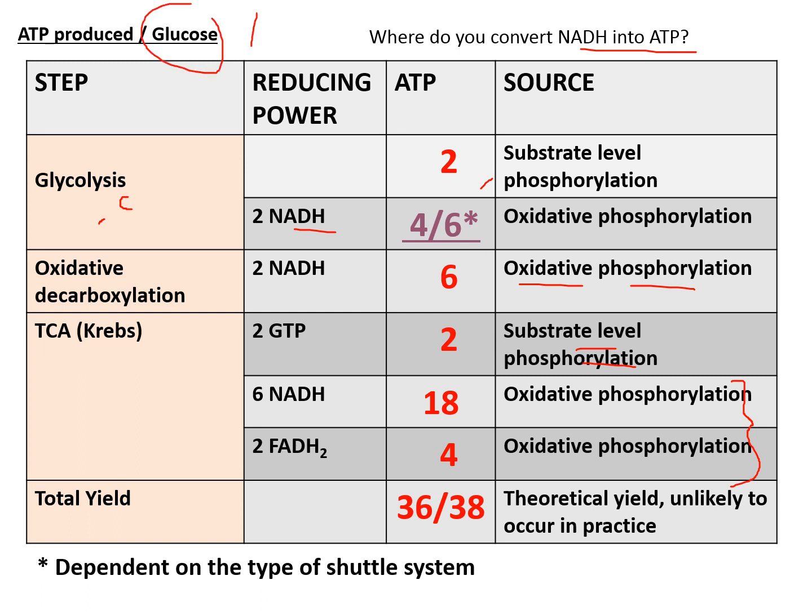With all these added together, you get a total of either 36 or 38 ATPs from just one glucose molecule. You don't need to know all these details — it is just for your reference.